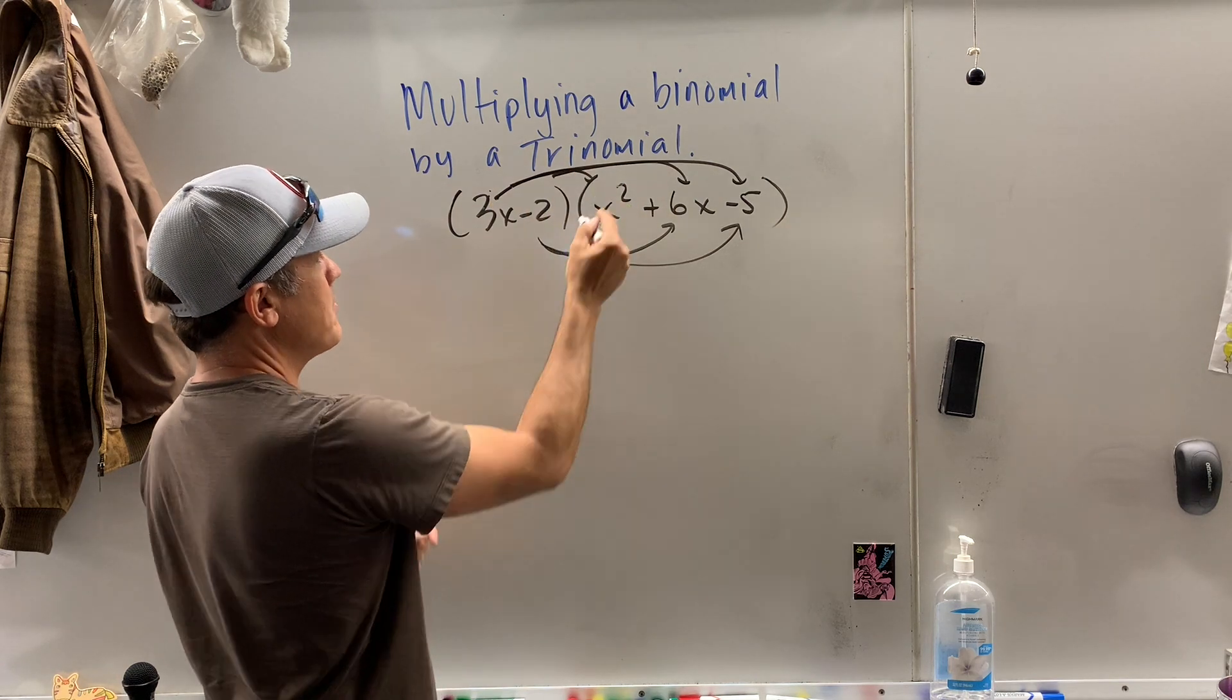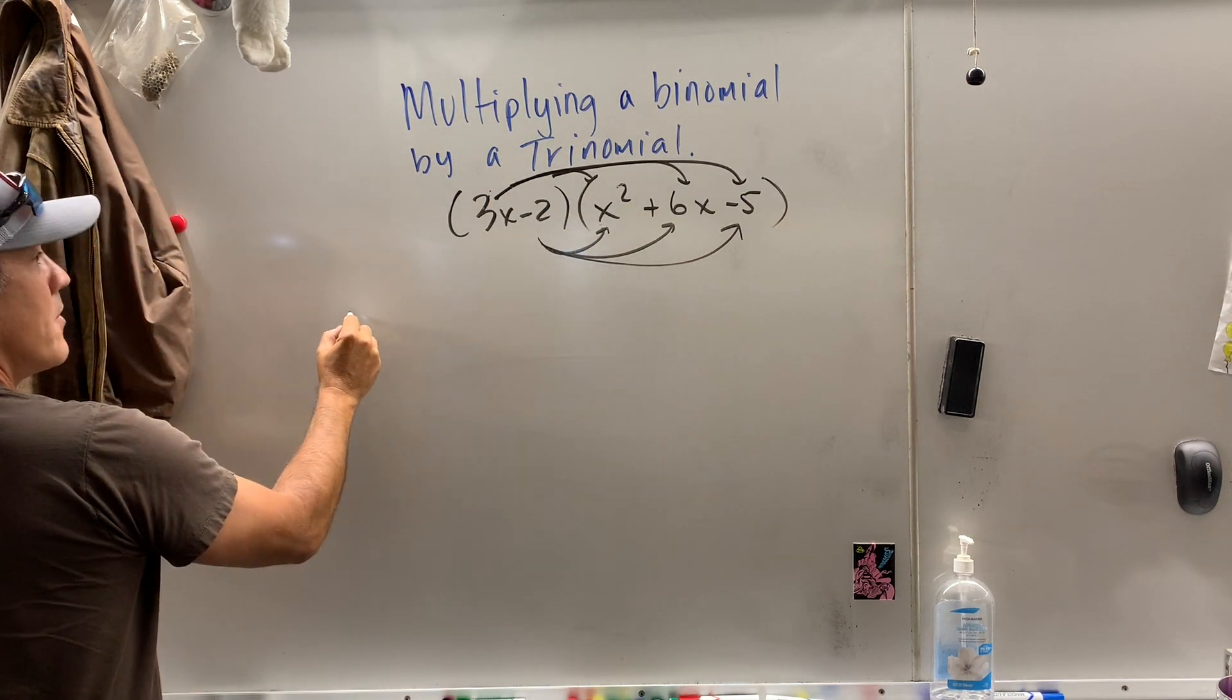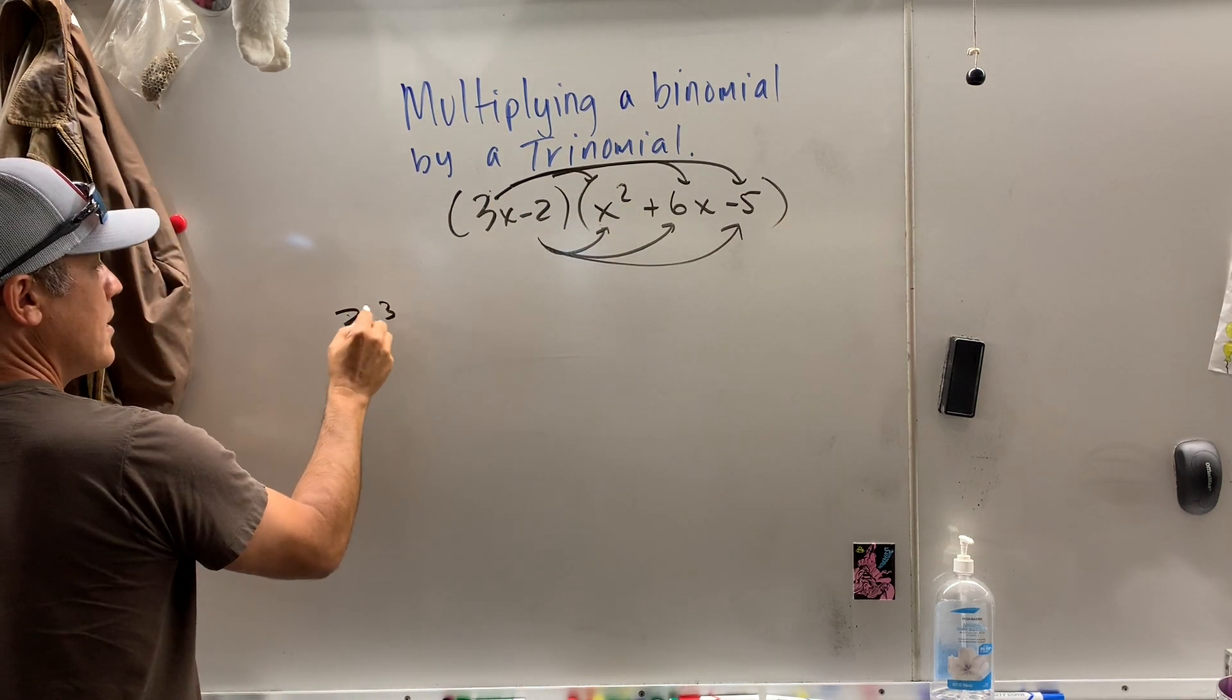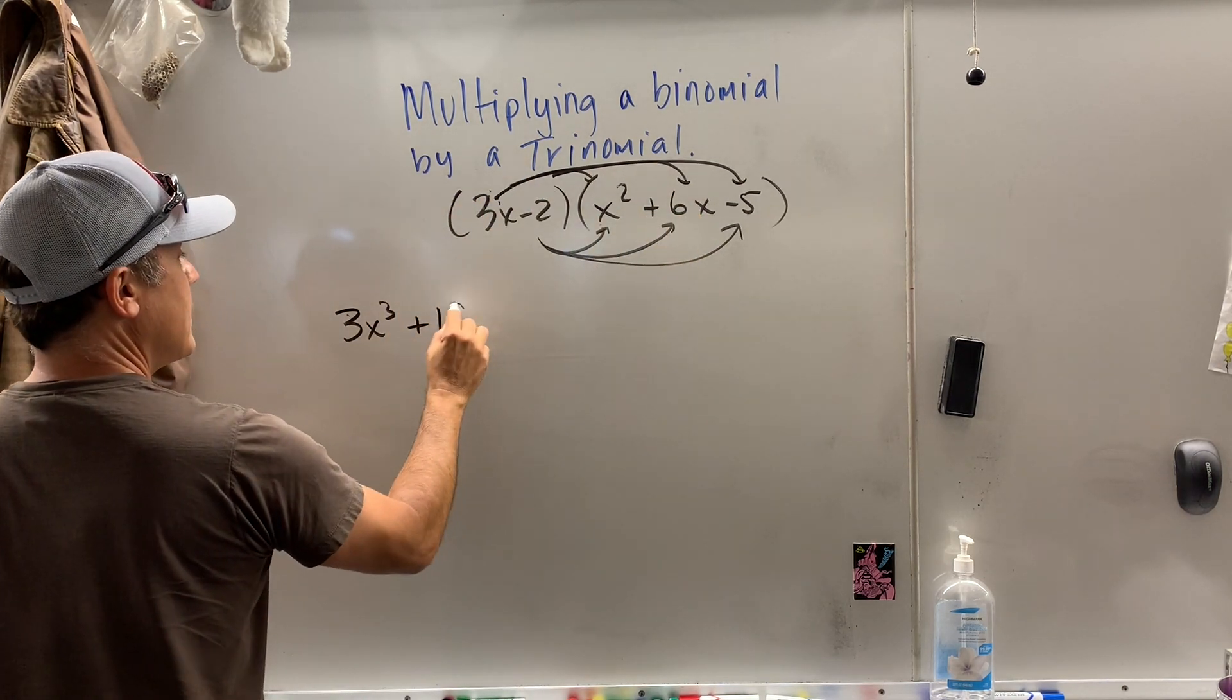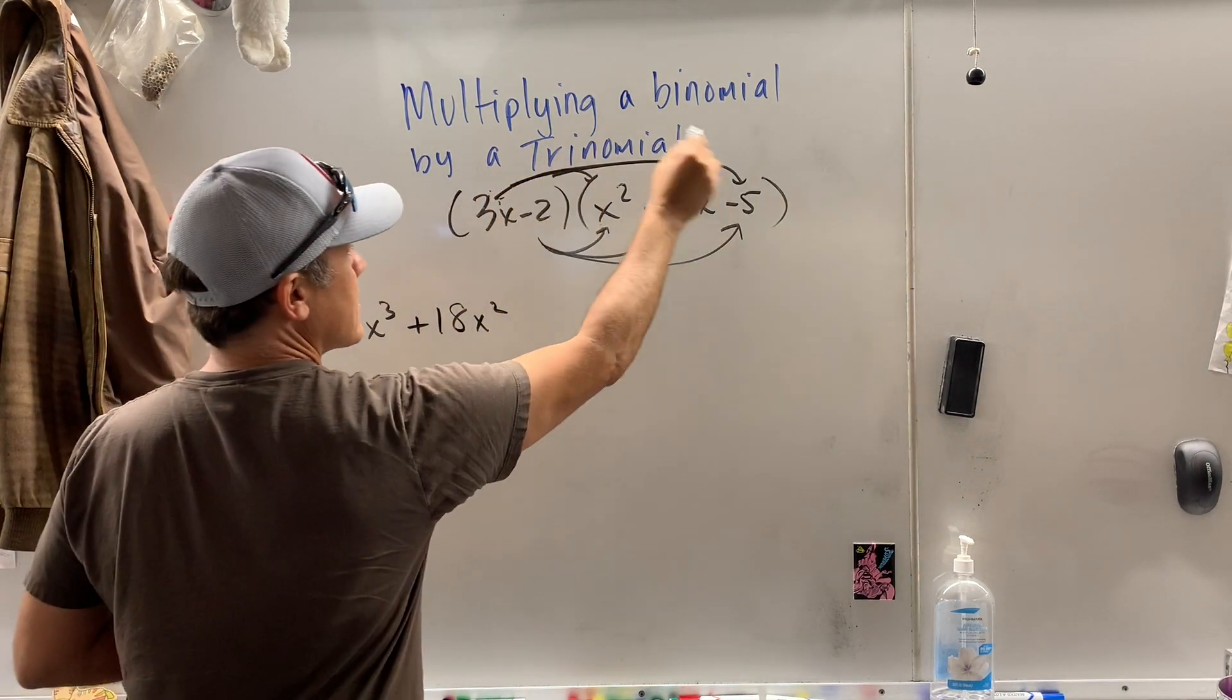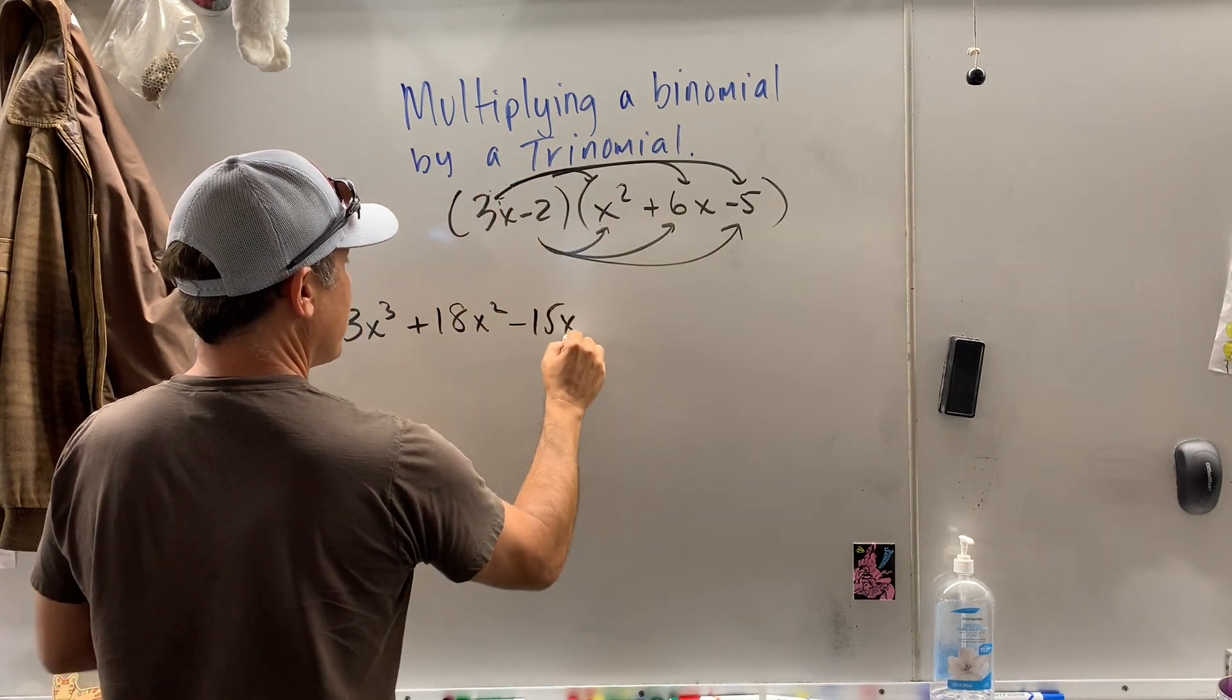So what is 3x times x squared? Well, I'm going to come over here. That's 3x cubed. What is 3x times 6x? That's 18x squared. What is 3x times negative 5? Negative 15x.